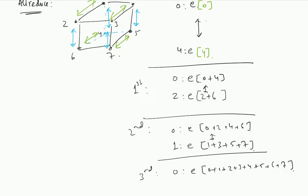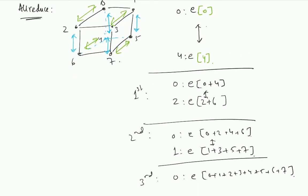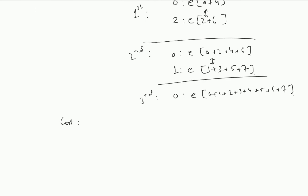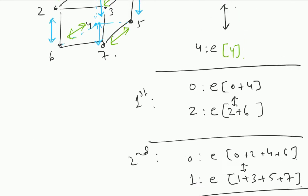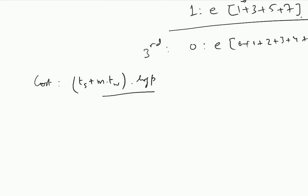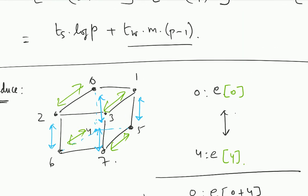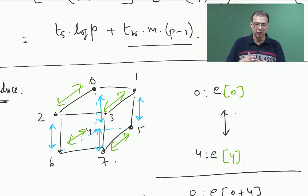Let us analyze the cost of all-reduce. In the first iteration the cost is T_s plus m*T_w, and this is the same for every iteration. So the total cost is (T_s + m*T_w) * log p. The only thing that differs between reduce scatter and all-reduce is the term associated with T_w — here it is log p, and there it is p minus 1. In reduce scatter you start with data of size m*p and each iteration the communication keeps reducing by half, but in all-reduce there is no reduction happening because everybody wants the entire result.